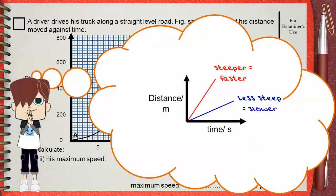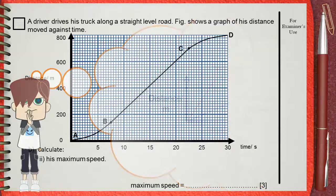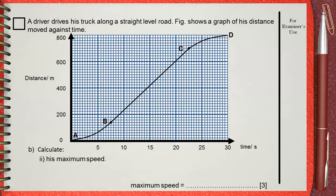By looking to the graph, you will find that the steepest part of the graph is that shown by B to C. This shows the maximum speed of the journey. To find this speed, just find the slope. Choose two suitable points that can make a large triangle.